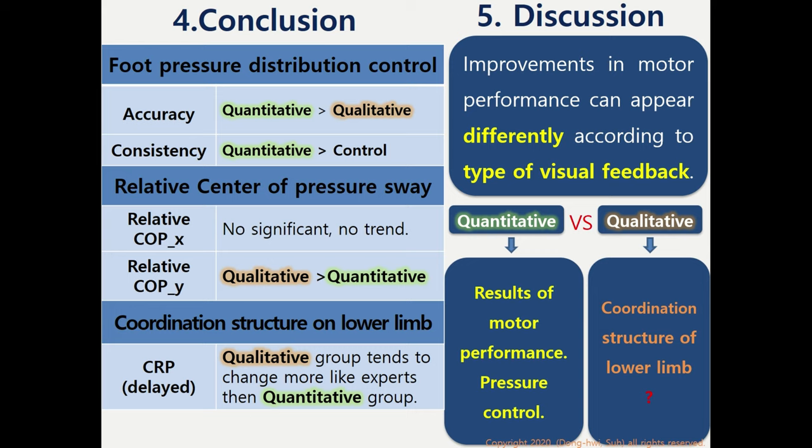According to the results of the present study, it seems that improvements in motor performance can appear differently according to the type of visual feedback. Collectively, the findings show that quantitative augmented visual feedback could improve motor performance and plantar pressure control better. We should also progress more specific experiments about whether qualitative augmented visual feedback could improve coordination structure of the lower limb better.